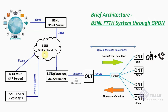Coming back to the MPLS cloud, the voice traffic which is divided is pushed on this path. Here we have BSNL's Voice over IP server, which is also called the SIP server. This server controls all the voice transactions amongst the ONTs and also with the outside mobile network. The management traffic from the MPLS cloud is divided on a separate path and is connected to the BSNL servers. We have a BSNL NMS server on which they will be able to monitor the condition of the OLTs and the ONTs.